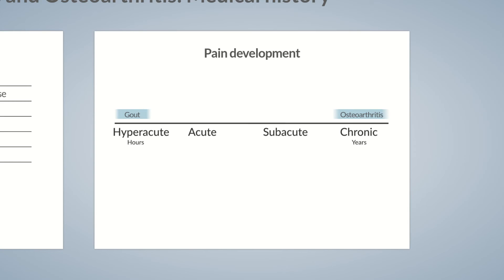Gout pain usually occurs in the evening after consuming alcohol or meat. Septic arthritis is characterized by an acute course, with pain developing within several hours to days. It can be caused by the direct invasion of the joint space by bacteria or viruses, or alternatively it can occur after joint aspiration and subsequent bacterial infection. Septic arthritis is considered a medical emergency.